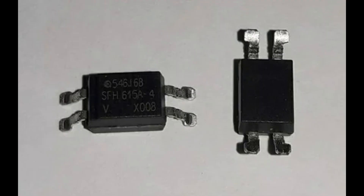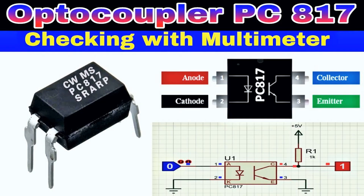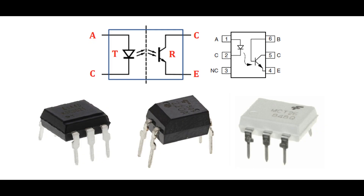In the case of a phototransistor output, the received light causes it to conduct current between its collector and emitter terminals, proportional to the light intensity, which can be used as the output signal. For a photodiode output, the light generates a voltage across its terminals, the magnitude of which is determined by the incident light intensity. The crucial aspect of signal transfer is that there is no direct electrical connection between the sections — the signal is transferred optically — ensuring electrical noise, voltage differences, or interference on one side does not affect the other.